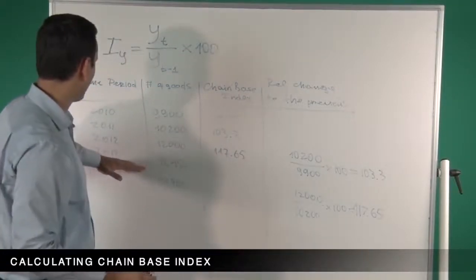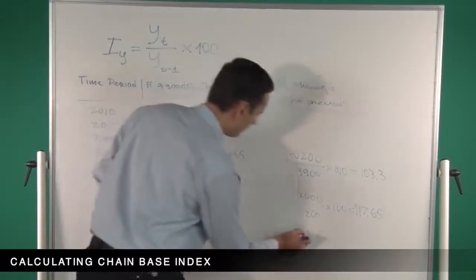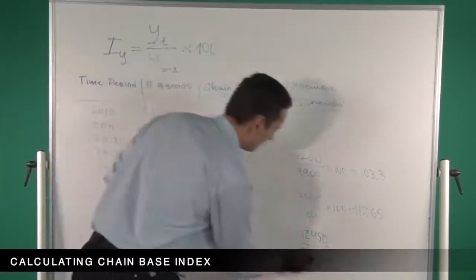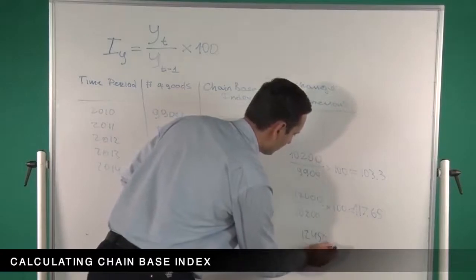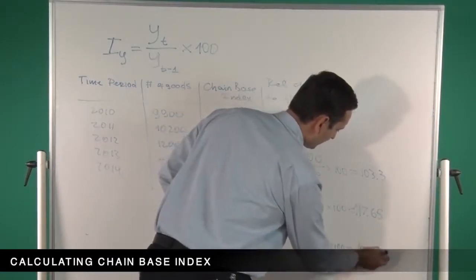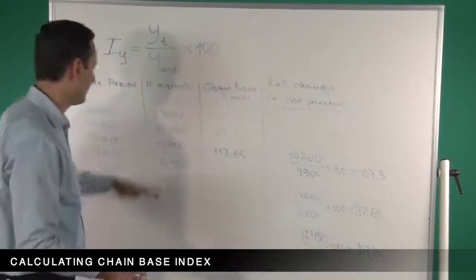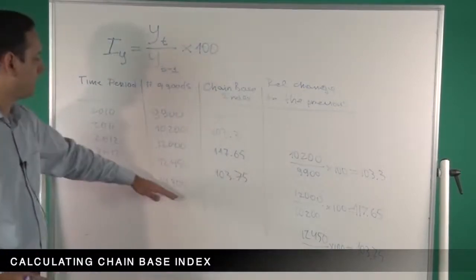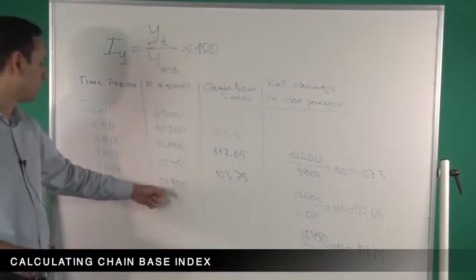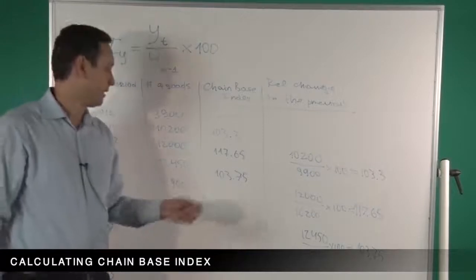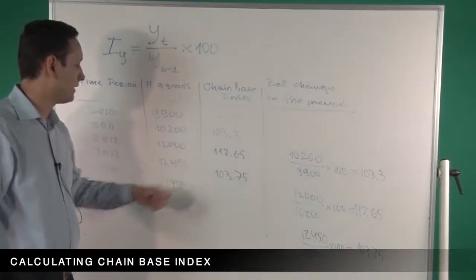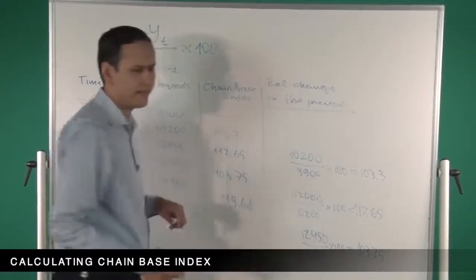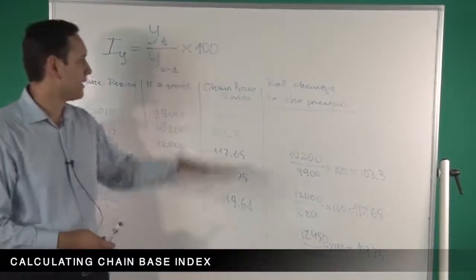For 2013, we divide 12,450 by the previous year, which is 12,000, multiplied by 100, giving 103.75. And for 2014, we divide 14,900 by the previous year's value, which is 12,450, multiplied by 100, giving 119.68. So here we have calculated the chain-based index, which means we compare each year with the previous year.